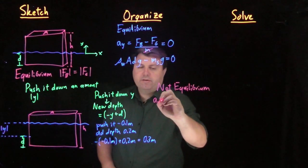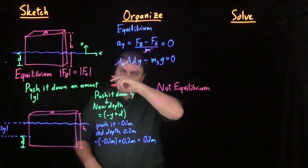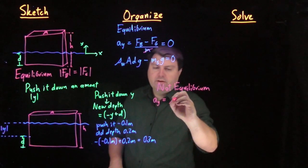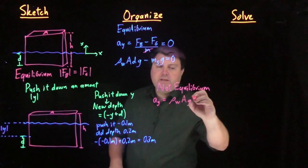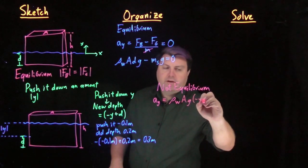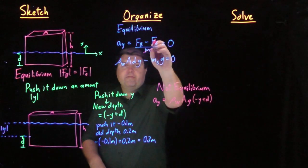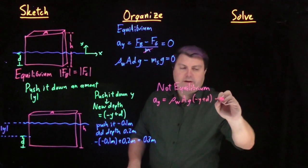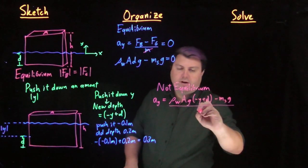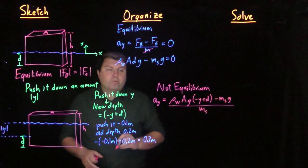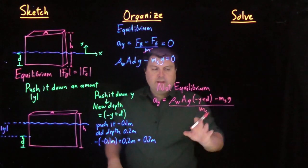So now if we have not equilibrium, we have that our acceleration of the y is equal to our new force of buoyancy: ρ_w A g times our new depth, negative y plus d, and we still have our old force of gravity minus the mass of the styrofoam times gravity, over our mass of the styrofoam. We're not in equilibrium so we can't say anything equals zero.